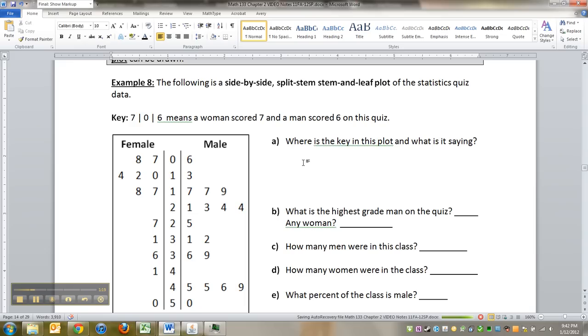Let me give you another example here. If it was, let's look at this one, 7 2 5. 7 slash 2 slash 5 means a woman in the class scored 27 because 2 is the stem, right? So it's still in the 20s.